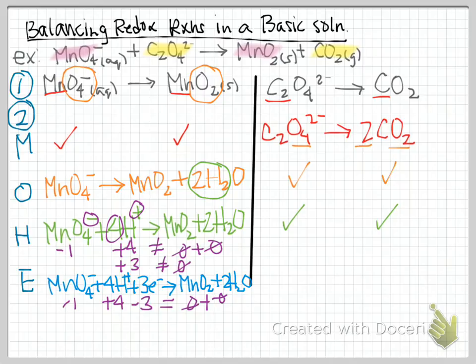Next half reaction, the one on the right. I'm looking at the half reaction in red. We have a minus two for oxalate and that does not equal the zero we have for carbon dioxide. No charge means no charge on the neutral molecule. So what do we have to do? We're adding negative electrons, so we're going to add them to the bigger side.